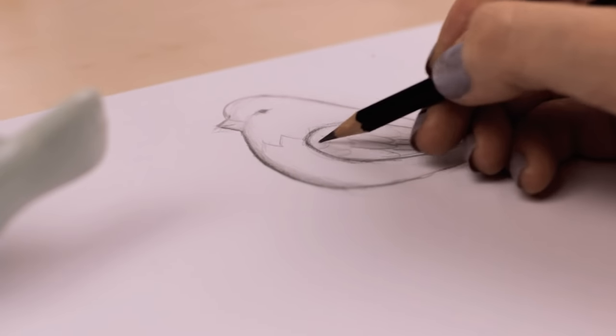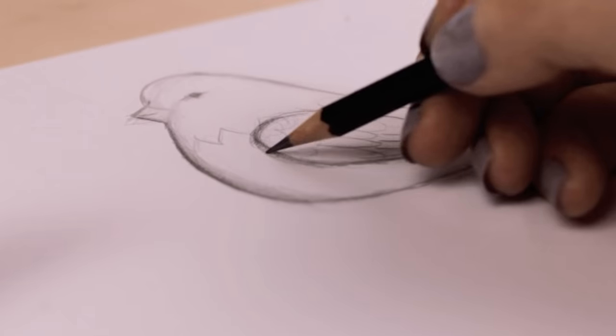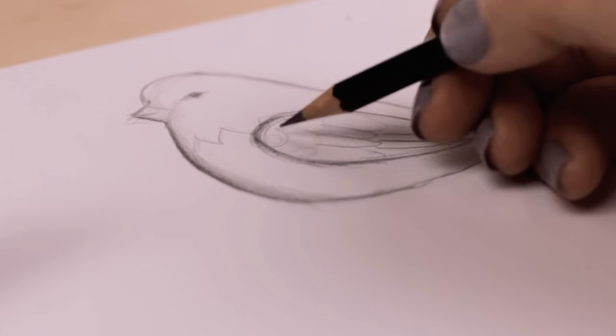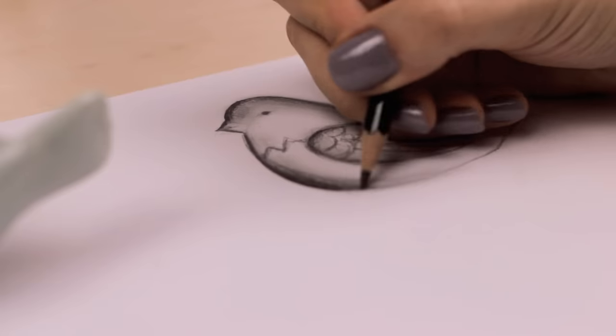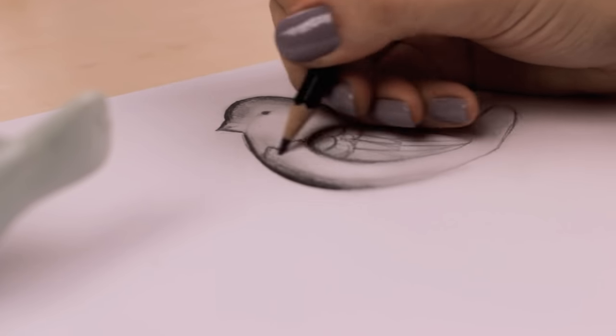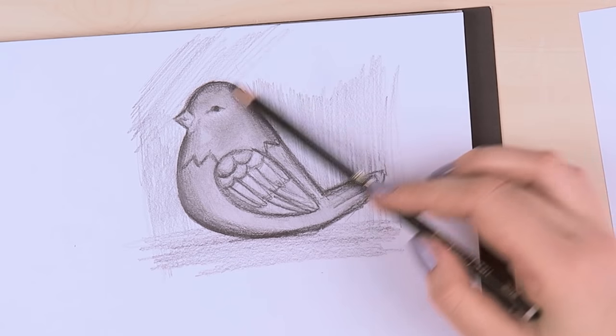If you want, you can also use a blending tool or tissue paper and blend out the sketched out shadows following the shape of the object. This will create a smooth surface. But you can also just keep it the way it is as all the different shading techniques give the sketch a really nice feel and character.